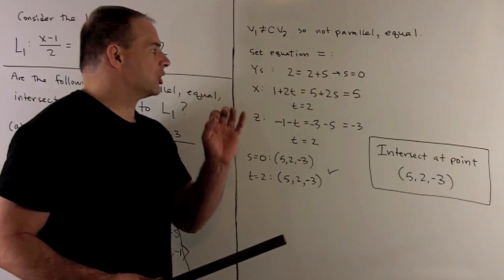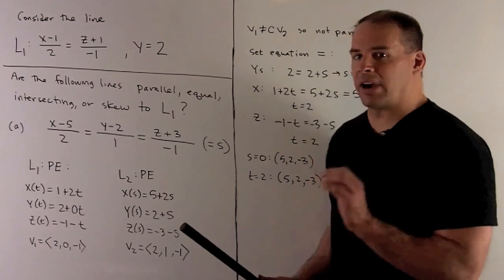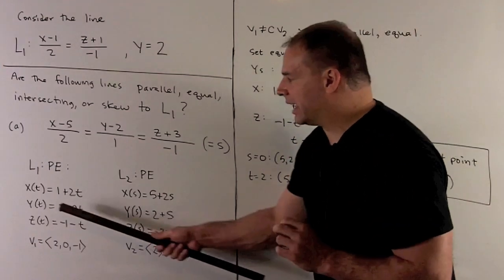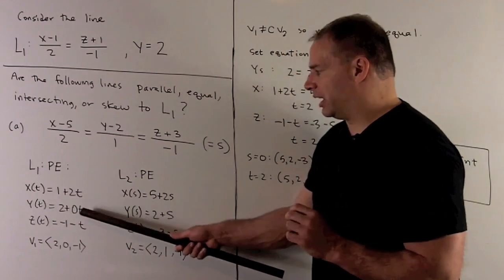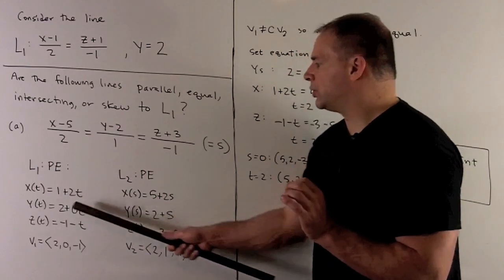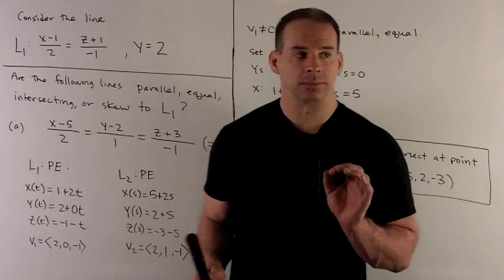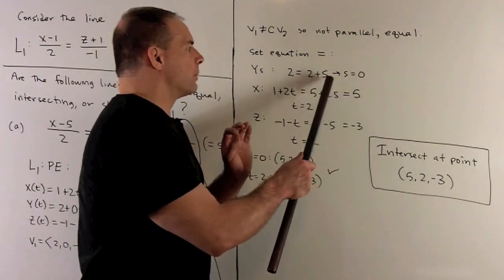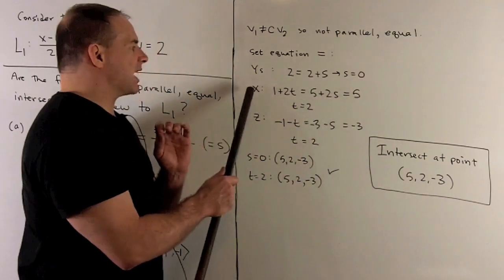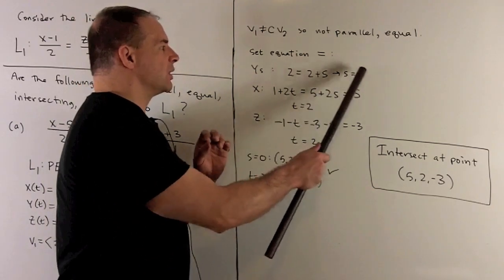To check for intersection, we set the parametric equations of L1 and the second line equal to one another and solve for s and t simultaneously. Starting with the y-equations is easiest since there's no t term: setting 2 equal to 2 plus s gives s equals 0. Then setting the x-equations equal gives 1 plus 2t equals 5 plus 2s, and since s equals 0, this simplifies to 1 plus 2t equals 5.